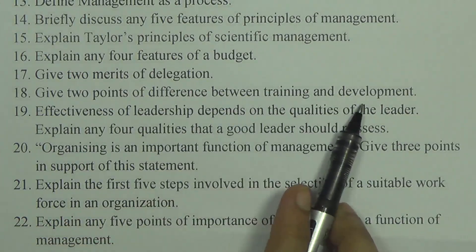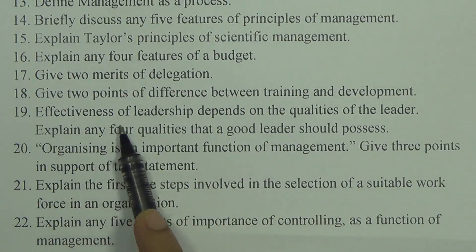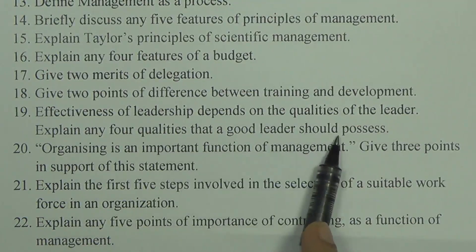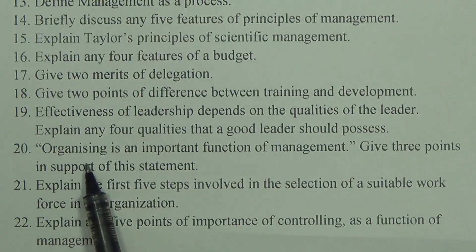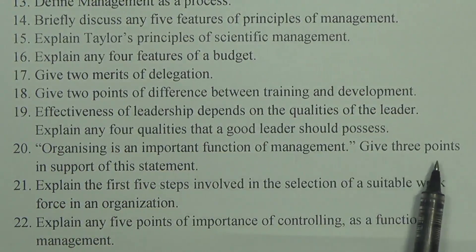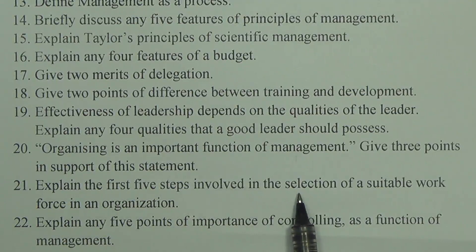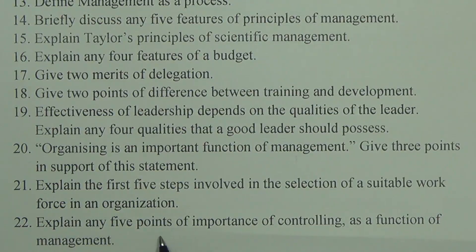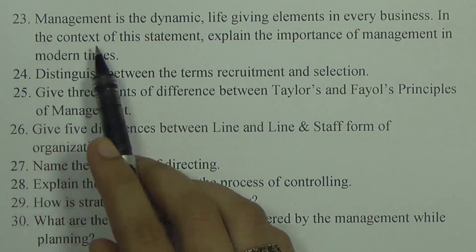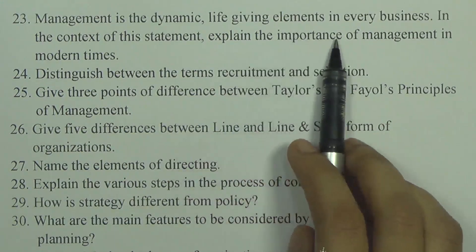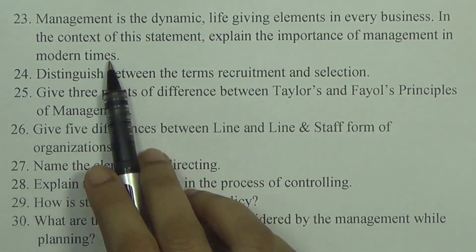Question seventeen: Give two merits of delegation. Question eighteen: Give two points of difference between training and development. Question nineteen: Effectiveness of leadership depends on the qualities of the leader — explain any four qualities a good leader should possess. Question twenty: Organizing is an important function of management; give three points in support of this statement. Question twenty-one: Explain the first five steps involved in the selection of a suitable workforce in an organization. Question twenty-two: Explain any five points of importance of controlling as a function of management. Question twenty-three: Management is the dynamic life-giving element in every business — in the context of this statement, explain the importance of management in modern times.